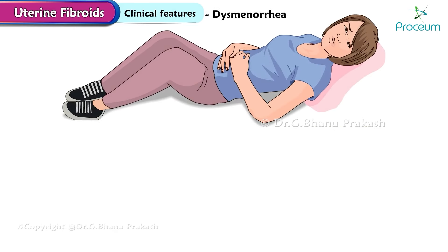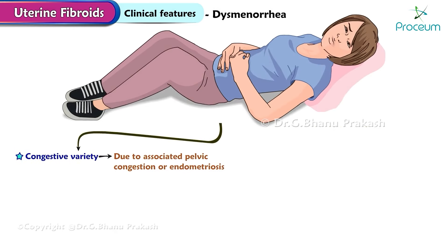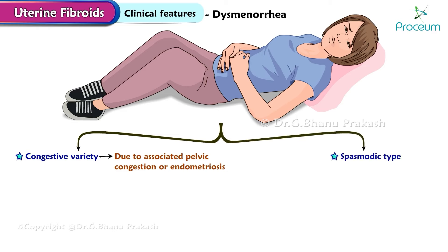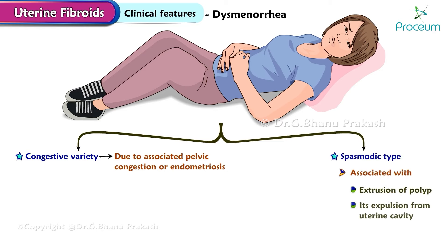Dysmenorrhea: the congestive variety may be due to associated pelvic congestion or endometriosis. The spasmodic type is associated with extrusion of a polyp and its expulsion from the uterine cavity.